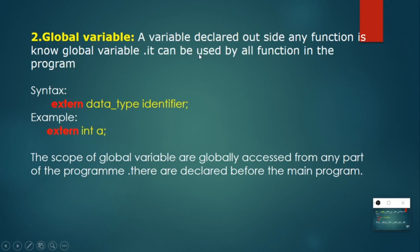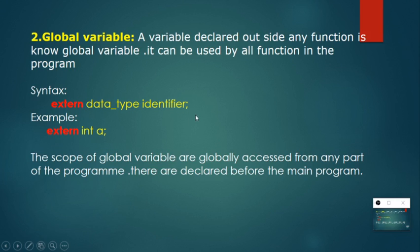Next is the global variable. For a global variable, we generally declare it outside of the main function, and it can be used by all functions including the main function and all sub-functions. The keyword we use for global declaration is 'extern'. The syntax is: extern, space, data type, identifier. Note that identifier and variable name are the same thing — don't get confused. For example, 'extern int a' is how we declare a global variable.